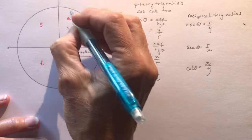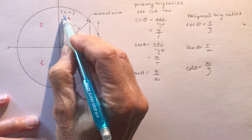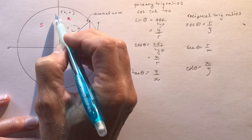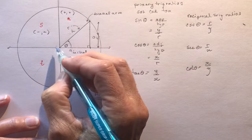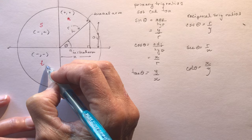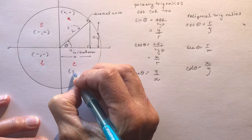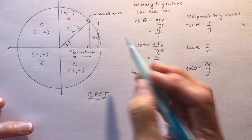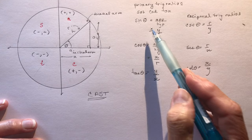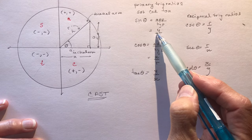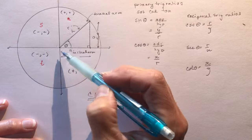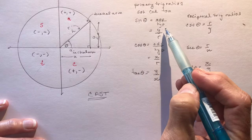In the first quadrant, all X's are positive and all Y's are positive. In the second quadrant, X's are negative but Y's are positive. In the third quadrant, everything is negative — X's and Y's are both negative, like the point (-2, -2). In the fourth quadrant, X's are positive but Y's are negative. So if you look at the signs of X's and Y's in these quadrants, and refer back to how X and Y relate to sine, cosine, and tan — remember, R is always positive because it has a length of 1 on the unit circle.